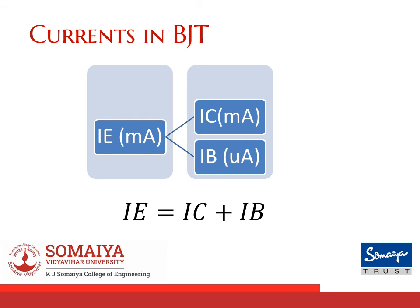Having studied the working of both NPN and PNP transistors in forward active mode, we can say that the emitter current IE is equal to the collector current plus the base current. Also note that base current is very small compared to IE and IC, and hence for most analysis we can say IE is approximately equal to IC.